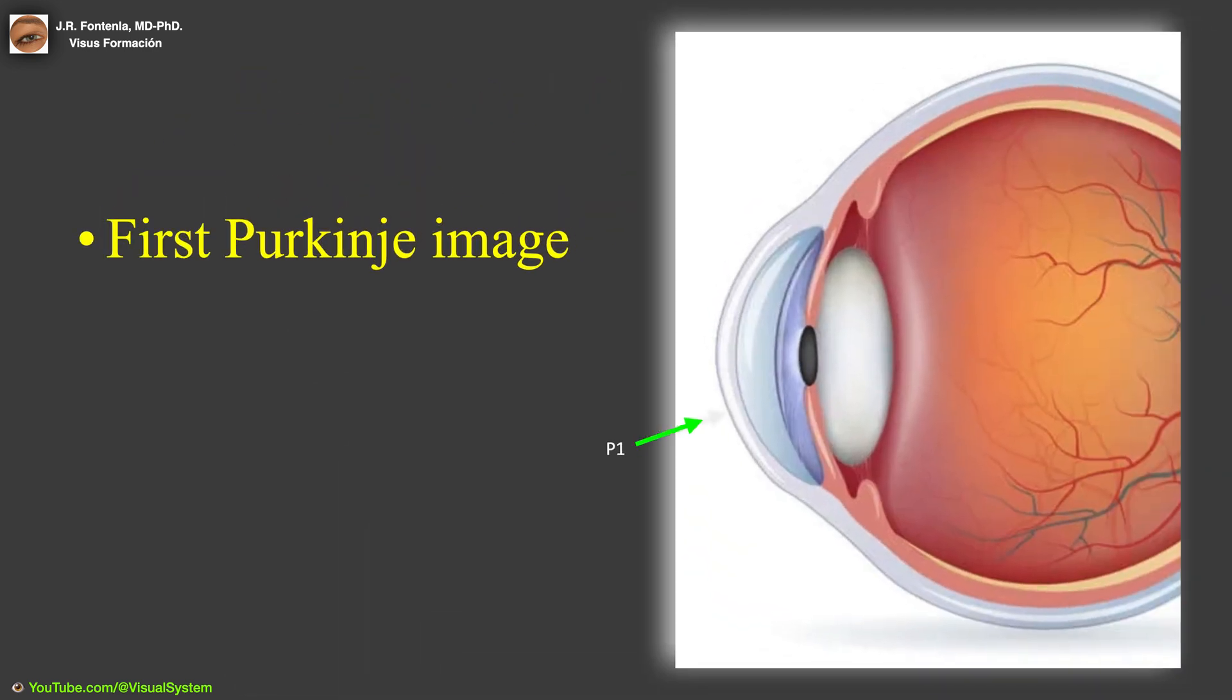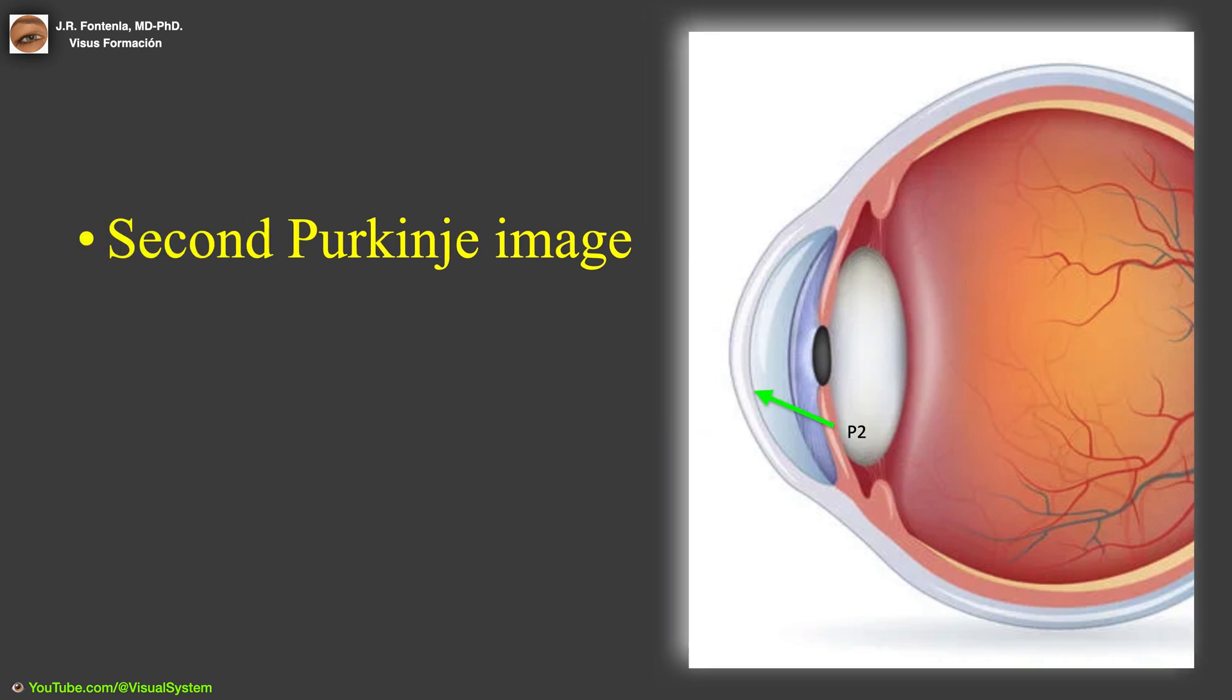The first Purkinje image is the reflection from the outer surface of the cornea. The second image is the reflection from the inner surface of the cornea.